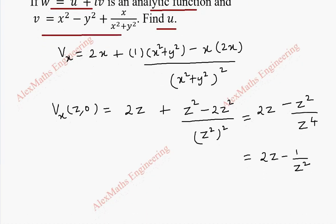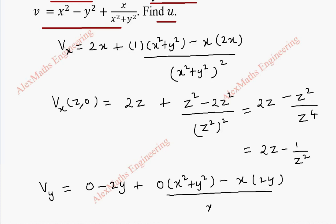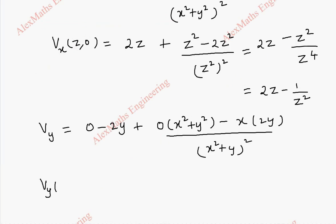In the same way we compute vy — the partial derivative of v with respect to y. The first term is 0, the second term is −2y. Applying the quotient rule, the x-derivative is 0 (since x is treated as constant), all divided by (x² + y²)². Now finding vy(z, 0): when y = 0, every term becomes 0, so vy(z, 0) = 0.